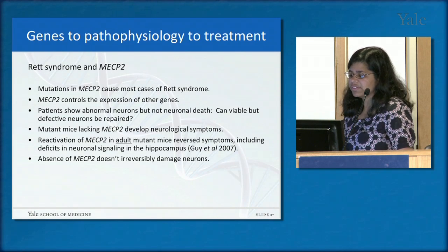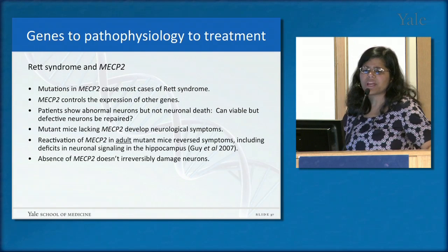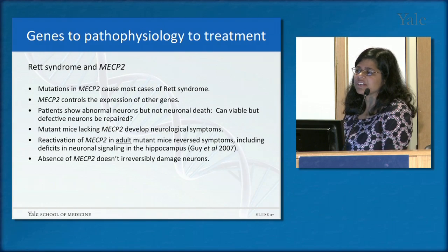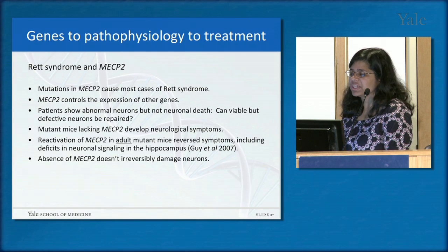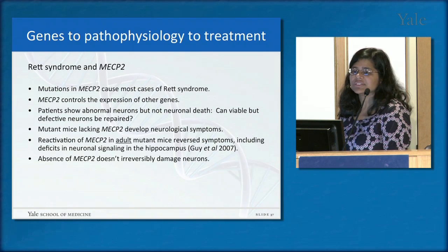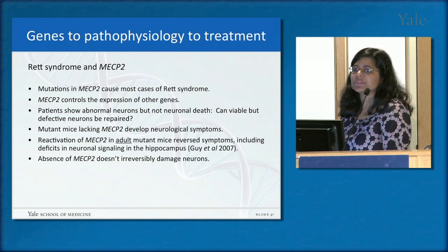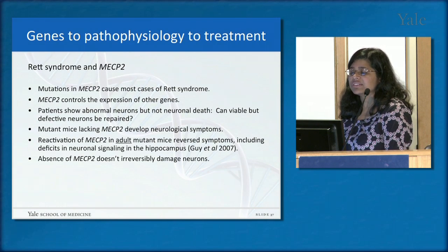A very important question from parents is: how does it help my child to find what gene might be involved? Will it change management or treatment? I would argue that it absolutely is important, and I'll give some examples. Genes help us understand pathophysiology — the disease mechanism — and that can really help us design treatments.